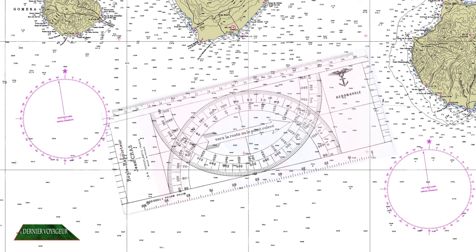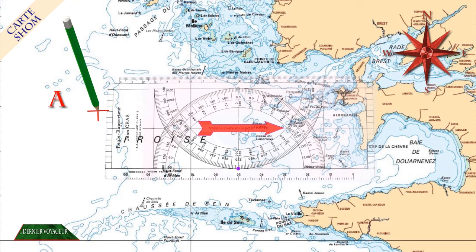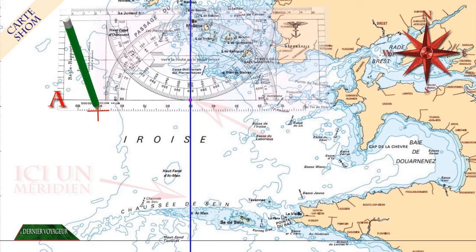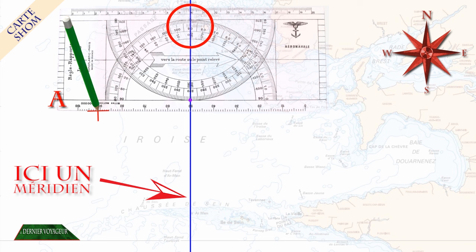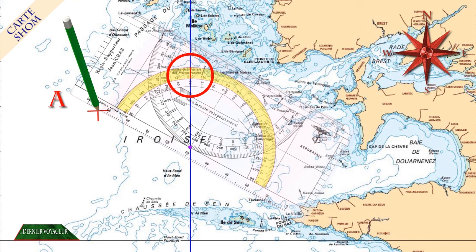Voici comment utiliser la règle. Nous sommes au point A et nous voulons faire route au 120. Maintenons un crayon sur notre position, puis posons la règle sur la carte, la flèche dans le sens général de notre déplacement. Appuyons la règle sur notre crayon et plaçons le centre du rapporteur sur un méridien ou un parallèle. Nous pouvons lire le cap sur la demi-circonférence qui présente le nombre droit pour notre œil. Ici le cap 90, mais nous voulons suivre le cap 120. Nous faisons donc glisser la règle sur le crayon, tout en maintenant le centre du demi-rapporteur sur le méridien, jusqu'à ce que la graduation 120 soit aussi sur le méridien. Nous pouvons maintenant tracer notre route au cap 120.